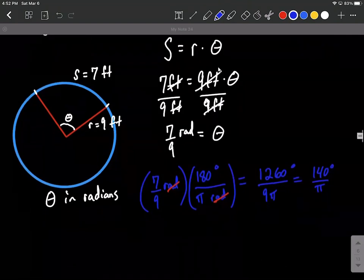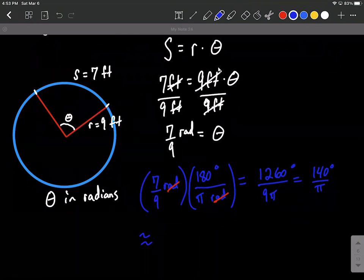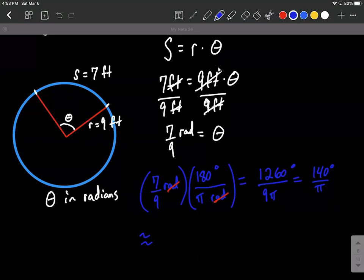What if we were asked for an approximation? Well, we went from the exact answer, both in radians and degrees. Now to get an approximation, what I'd probably do is just get the calculator out, do 140 divided by pi. On my calculator, that's above my exponent button. So I have to do like a second, and then a shift, like a second, and then my exponent button. I got this to be 44.56 degrees, approximately.